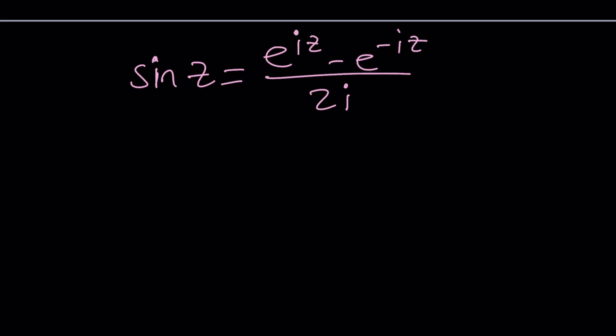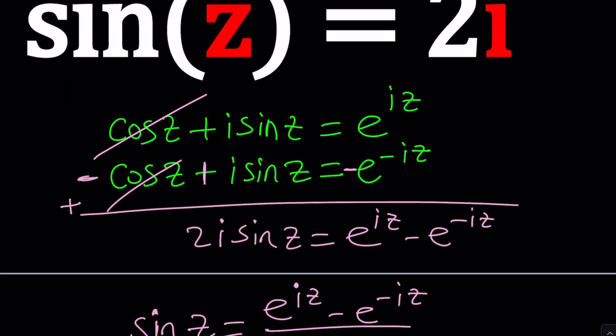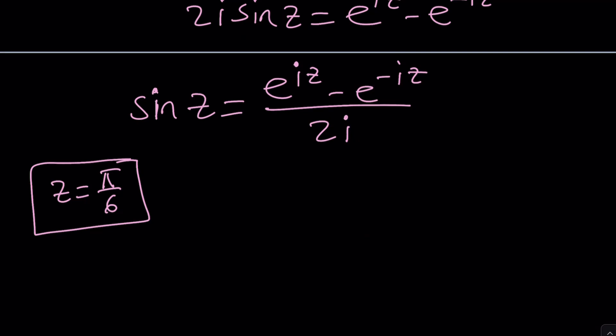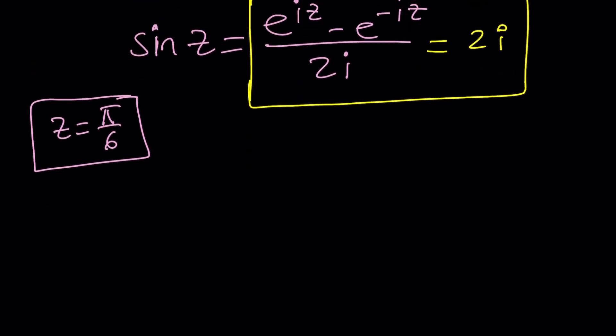And if you replace z with like pi over 6, obviously this should give you sine of 30 degrees which is supposed to be 1 half. And you can test it out. Definitely that should work for you. So let's go ahead and set this equal to what we were given. In our equation, sine z was equal to 2i. And let's go ahead and set this equal to 2i. And we can totally forget about the sine now because we basically turned a trigonometric equation into an exponential one.